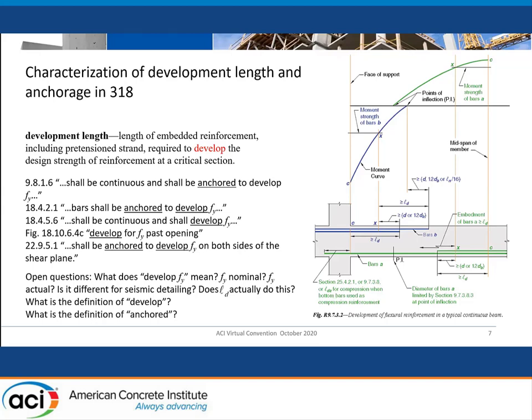Develop FY past the opening shall be anchored to develop FY on both sides of the shear plane. So what does it mean to develop FY? For most of us, it always just meant the bar is going to reach its yield value. In the seismic world this is especially important. But are we talking about at a mean strength level? Are we talking about something else? Is it different for seismic detailing? Is the 125% that we typically throw on L_DT enough for that? There are a lot of questions that circulate around this language.